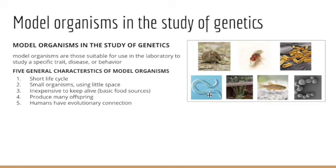We have a roundworm called C. elegans, which has been a really great model organism because it has a very small number of cells in the body — 959 cells on average. It has led to our understanding of apoptosis — controlled cell death — in the study of cancer. It can be used in developmental biology to examine cell lineage, to study the formation and function of the nervous system, and to look at cell proliferation and cancer genes.